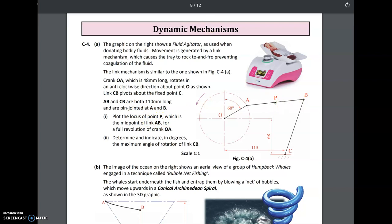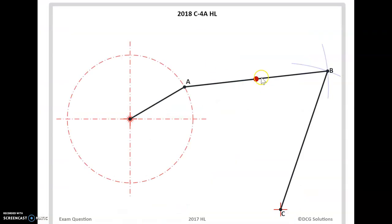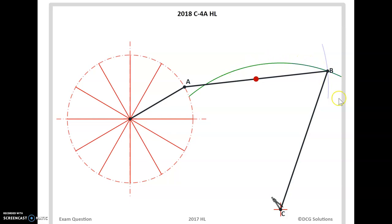Point P is the midpoint of AB, so it's halfway on AB. CB is going to rotate over and back like this. We're dividing up our circle; the green line here is the movement of B, so it's just going to move across here, over and back.